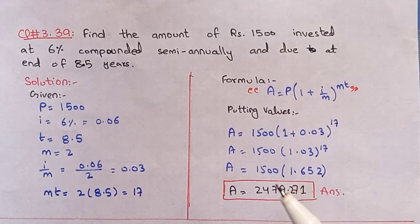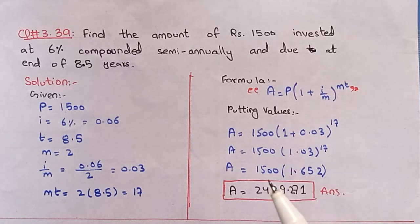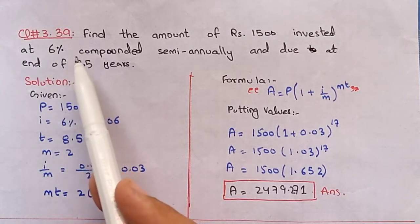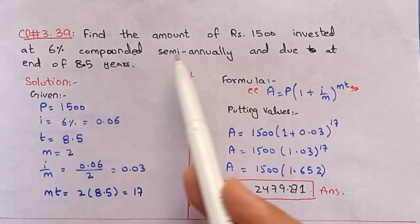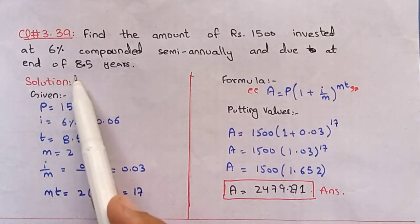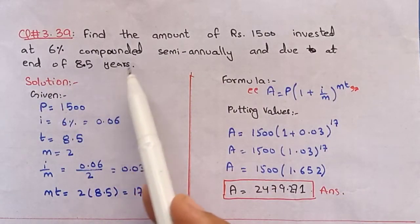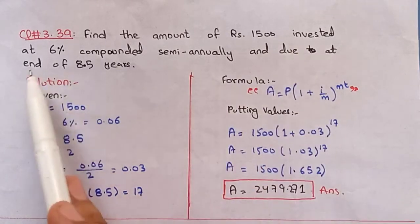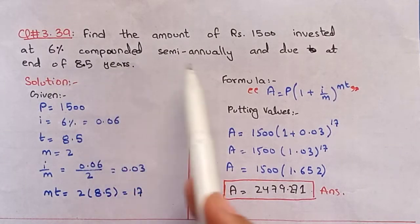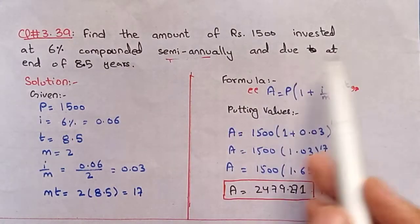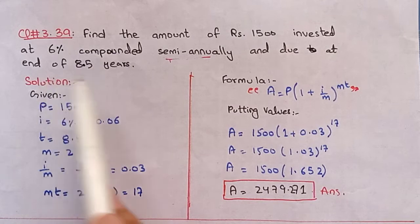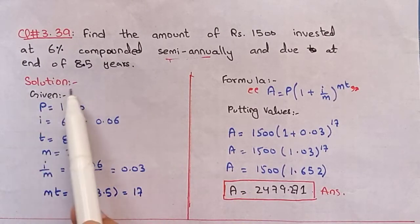Assalamualaikum, welcome back to your learning point. Today I'm going to practice Business Mathematics for 11 Commerce, Chapter 3: Interest and Annuities, Exercise 3. Question number 3.39: find the amount of rupees 1500 invested at 6% compounded semi-annually and due at the end of 8.5 years. We have to find the total amount after 8.5 years.